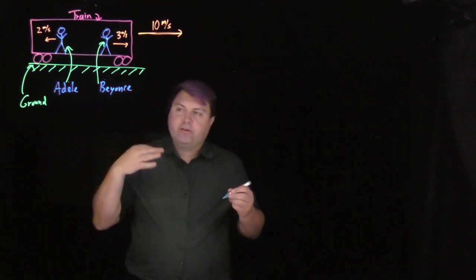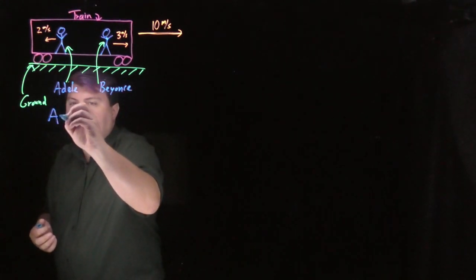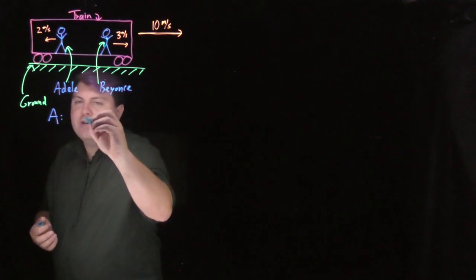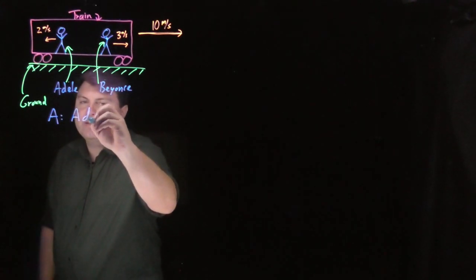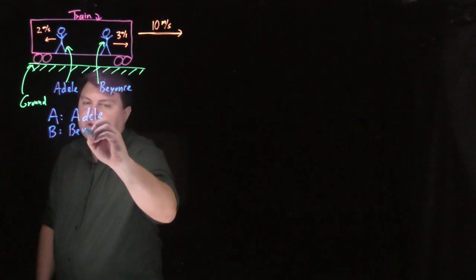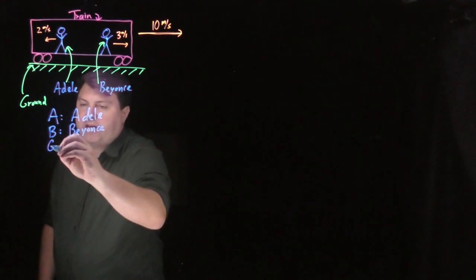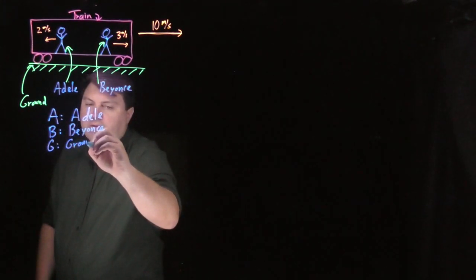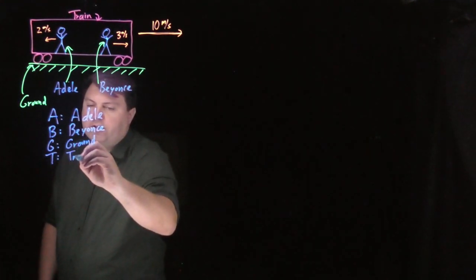We are going to use single characters to make our lives a little bit easier. Every time I say A, I mean Adele. Every time I say B, I mean Beyonce. Every time I say G, I mean the ground. And every time I say T, I mean the train.